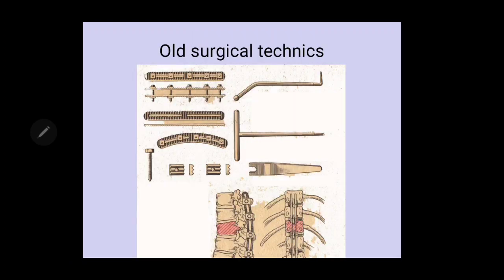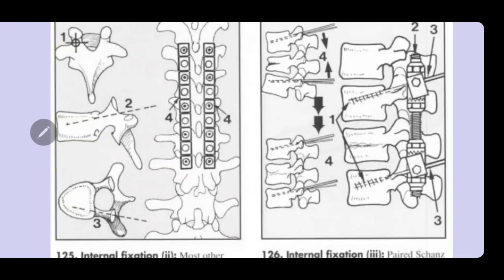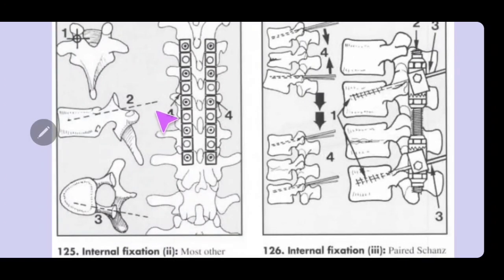Unstable fractures require surgical treatment. Nowadays, transpedicular fixation systems are used: screws are inserted through the pedicles into the vertebral bodies of the vertebrae above and below the fracture, and then fixed posteriorly with a plate or rod. This procedure must be performed under image intensifier control. The screws are inserted through the pedicles at a specific angle to avoid damaging the spinal cord.